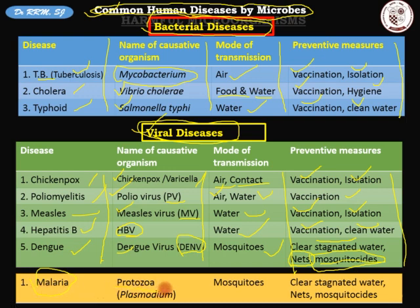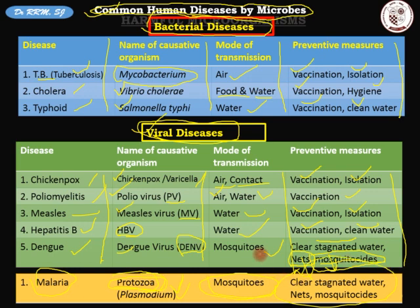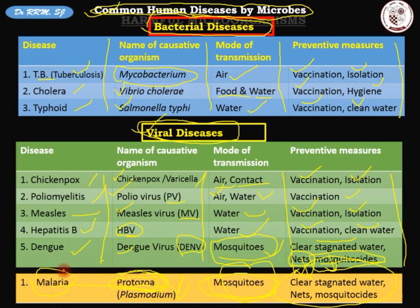The last disease is malaria. It is caused by a protozoa called Plasmodium. There are two types: Plasmodium vivax and Plasmodium falciparum. You need only remember Plasmodium. Malaria is also transmitted by mosquitoes, so the preventive measures are the same. Note: in dengue the causative organism is a virus, while in malaria it is a protozoa — do not get confused.